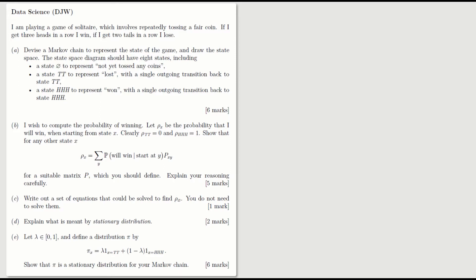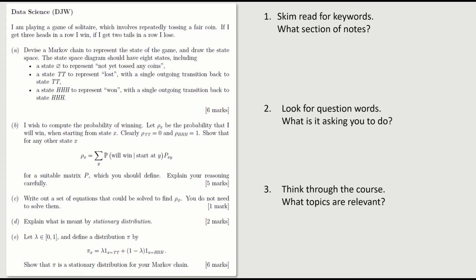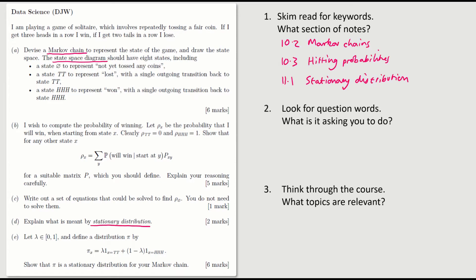Here's the question. First thing to do when looking at a question: skim read it and look for keywords, and figure out what section of the notes it's talking about. Here are the keywords I spot: Markov chain, state space diagram, stationary distribution. It's obviously something to do with section 10.2 about Markov chains and section 11.1 about stationary distributions.